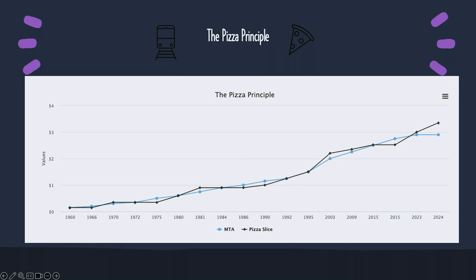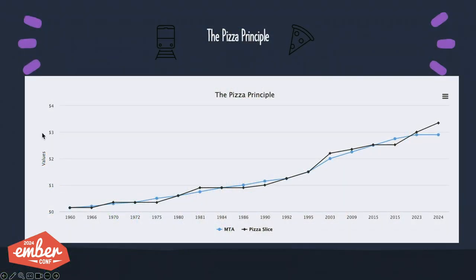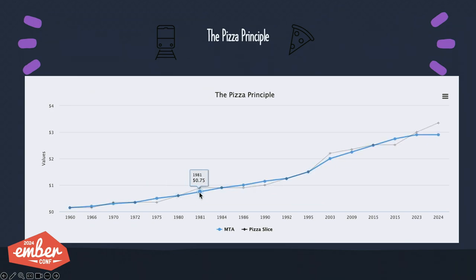Here's the demo I built for this talk. In the spirit of being in New York, I thought about a fun data visualization — and I learned about the pizza principle. It's an economic concept discovered in the 1980s, true since the 1960s: the average price of one slice of cheese pizza in New York has matched almost exactly the fare of one MTA subway ticket. This did recently change in 2023–2024 and there are many financial articles about it — New York is in uproar. Here's my demo showing the graph re-rendering, with HiCharts tooltips hovering over the prices of the fare and the pizza slices.